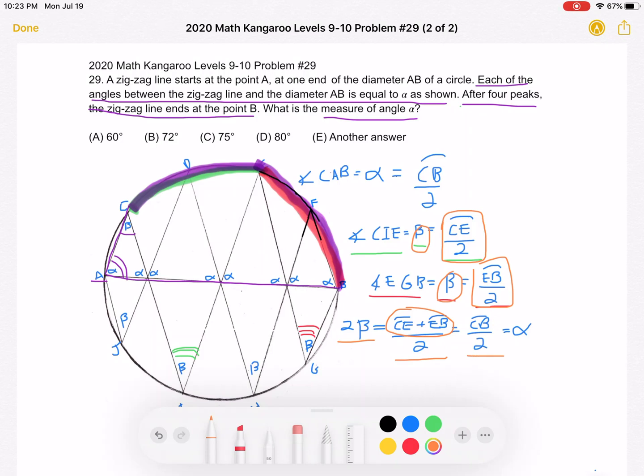Well, what do we know? We know that this sum, CB over 2, arc CB over 2, is really equal to, is also equal to alpha. So the relationship we came up with is that 2 beta is equal to alpha.